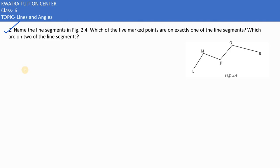Let's have a look at the second question. It says name the line segments. First of all, you have to identify the line segments here. So line segments are LM, second is MP, third is PQ, and then we have QR. Then they are saying which of the five marked points are on exactly one of the line segments.